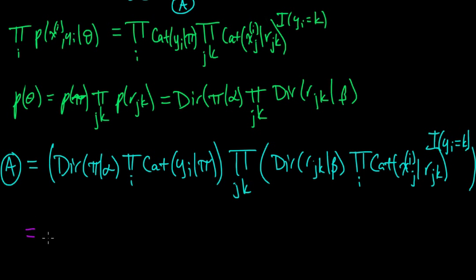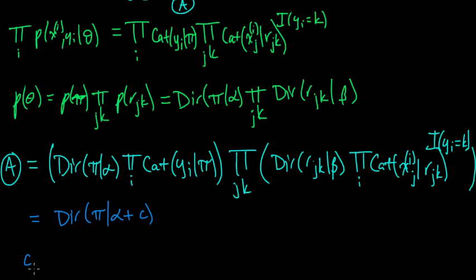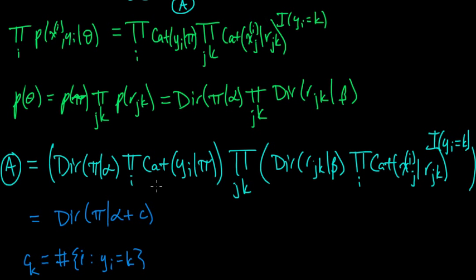This one becomes — the Dirichlet absorbs the categorical — so this becomes a Dirichlet on π with parameter α plus C, where C_K is the number of Y's such that Y equals K. This was from the video on the Dirichlet-categorical conjugacy.